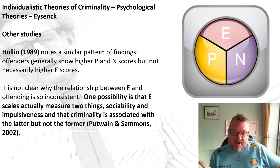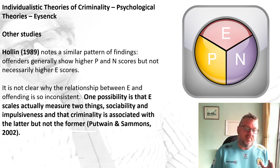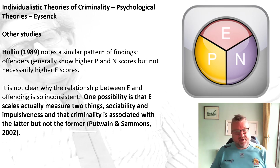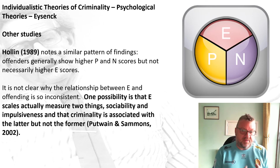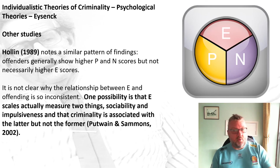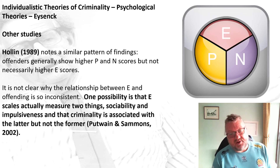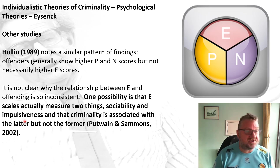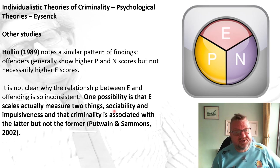It's not entirely clear why the relationship between E and offending is so inconsistent. One possibility is that when measuring the E-scale, it's actually measuring two distinct things: sociability — your ability to get on with people and interact with others — and impulsiveness. Impulsiveness would be associated with criminality, but sociability may not necessarily be. So the E-score may not be straightforwardly important because it conflates these two things; impulsivity within the E-score may link to criminality, but sociability may not.